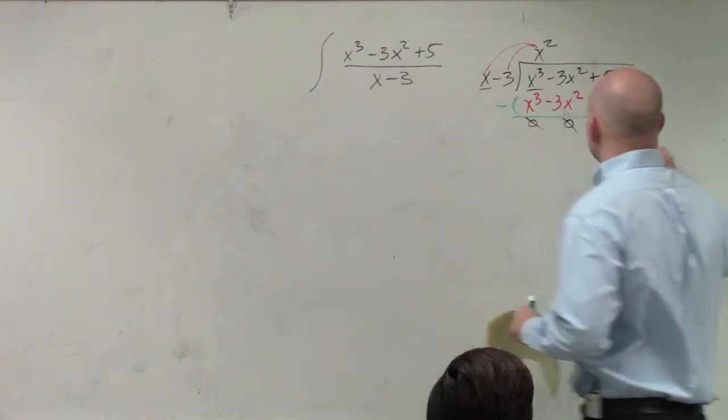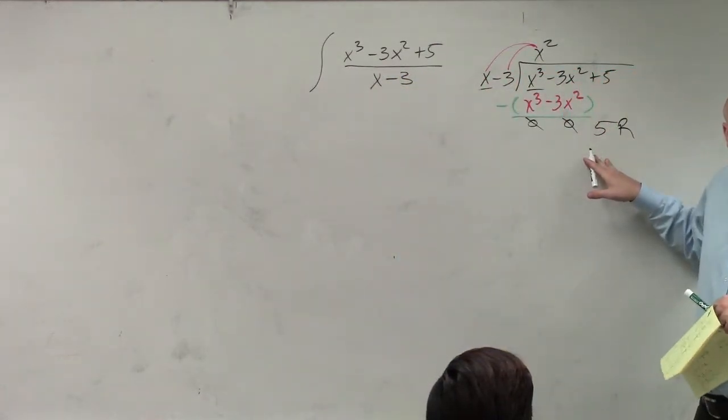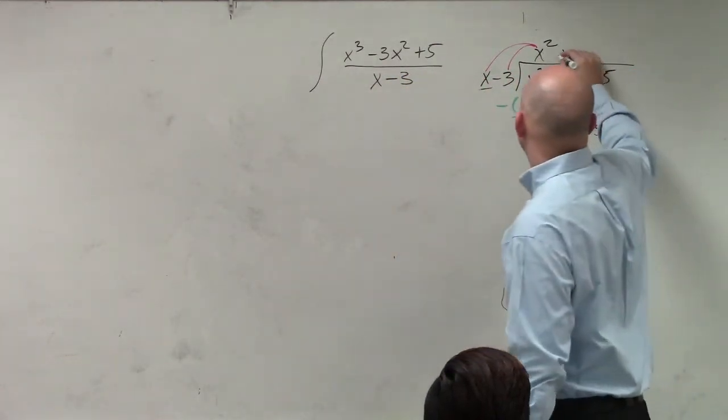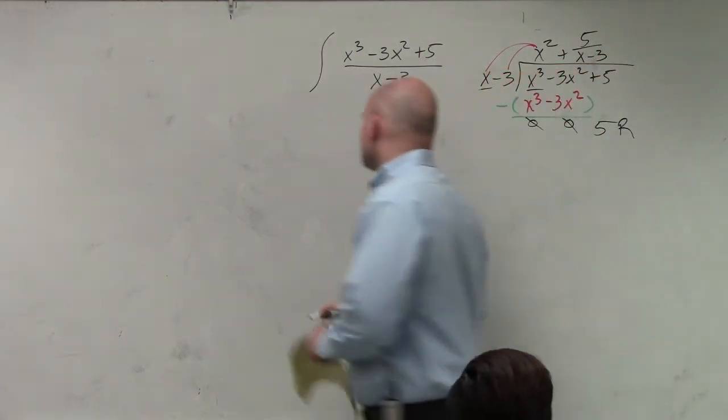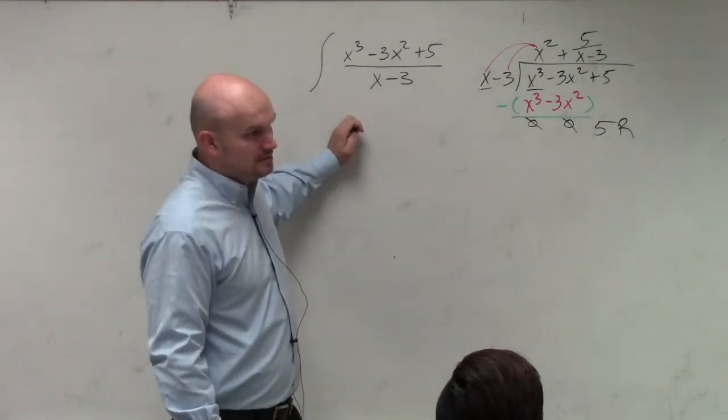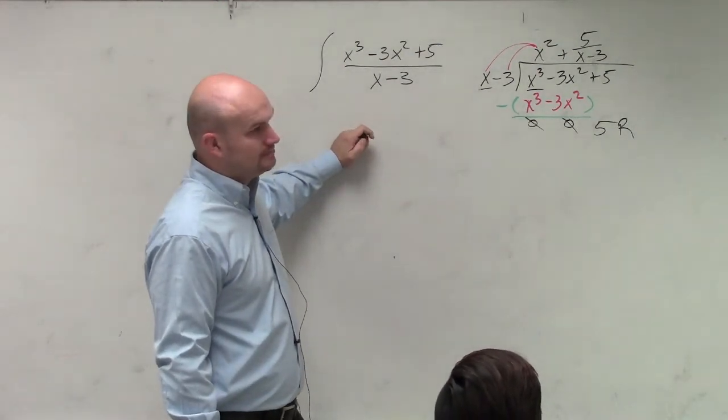So we could say 5 is going to be your remainder. But if you remember, the way that we learned how to write this was 5 over the divisor. Correct? OK.